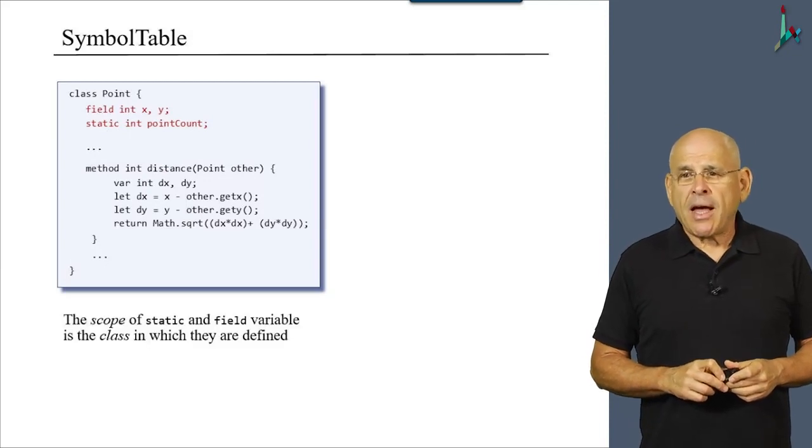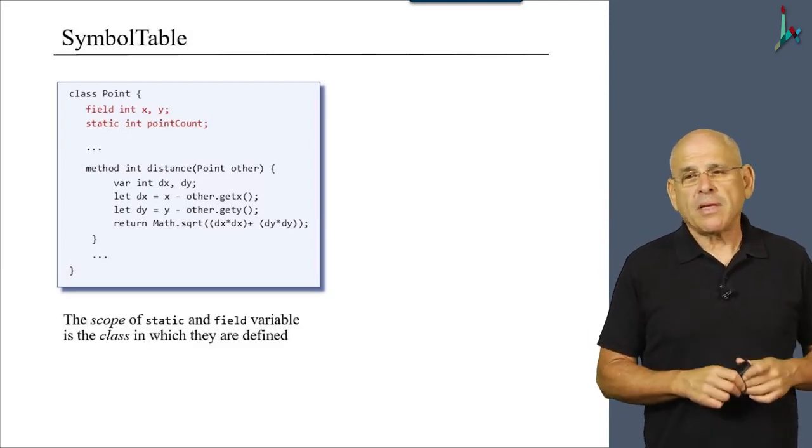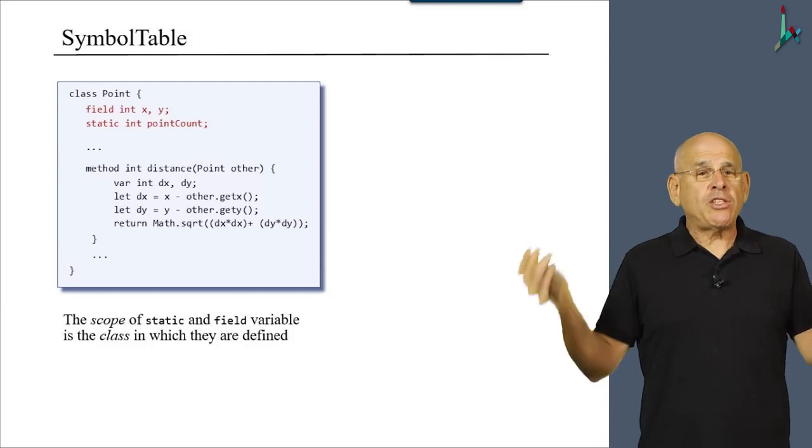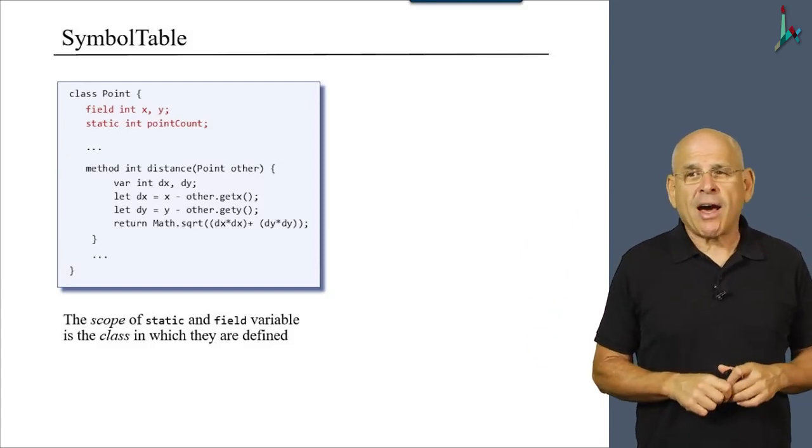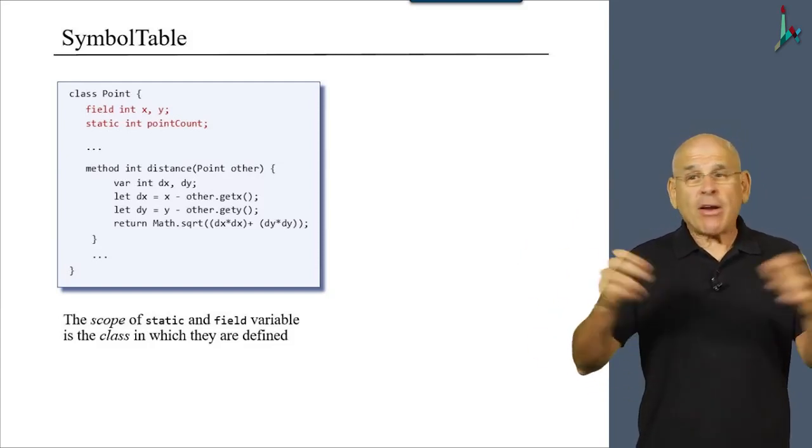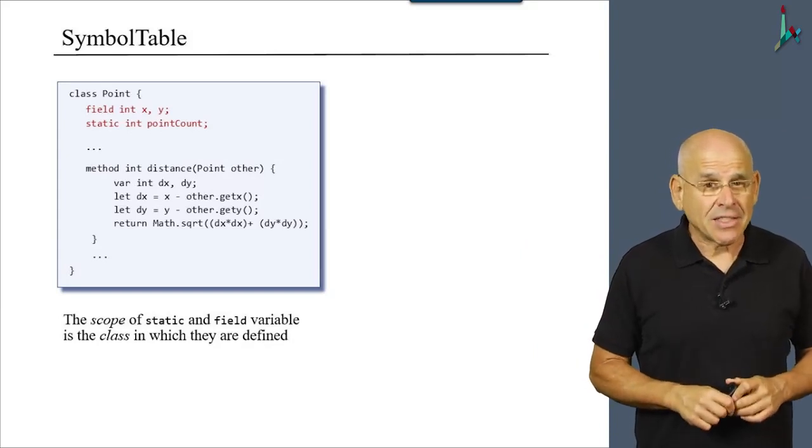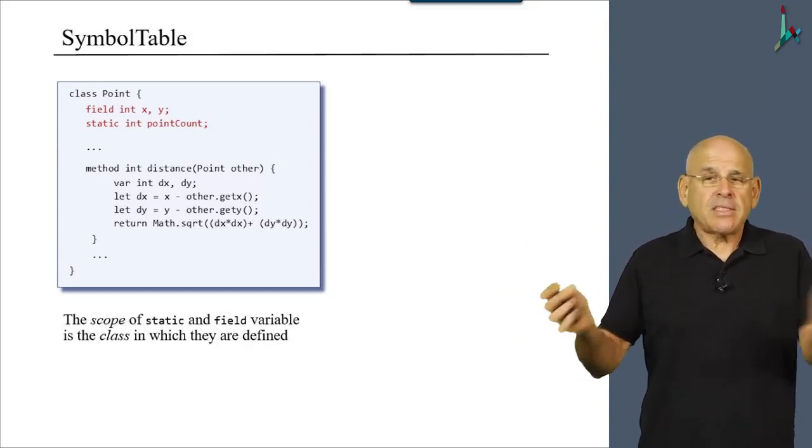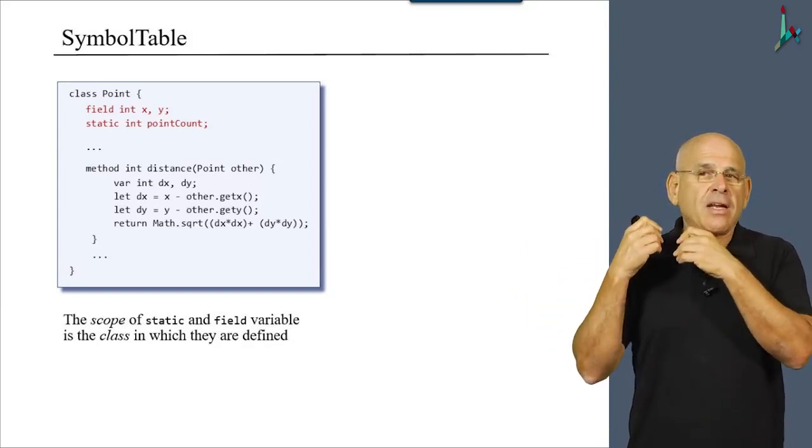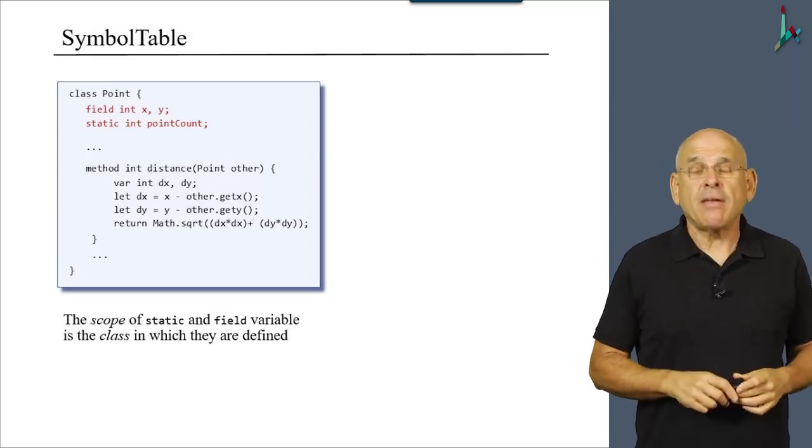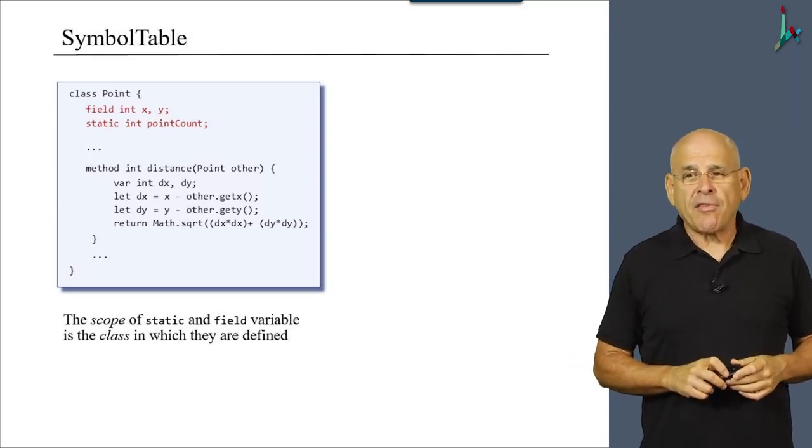These variables have a scope. And the scope is the region in the program in which they are recognized. And they are recognized throughout the class, right? Any subroutine in this class can see and manipulate static and field variables.